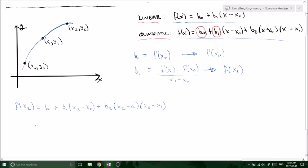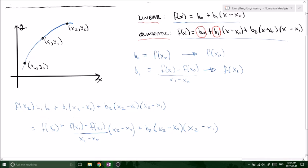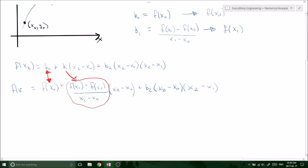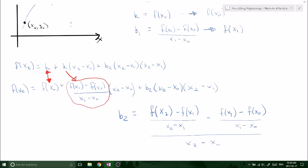Plugging that in, this is what we get. Remember B naught is equal to f of X naught and B1 is this whole thing here, so don't forget that. Then everything else is the same and now B2 is the only unknown, so we need to solve for B2. We have f of X2 and then we solve for B2 and we get this monstrosity of equation.